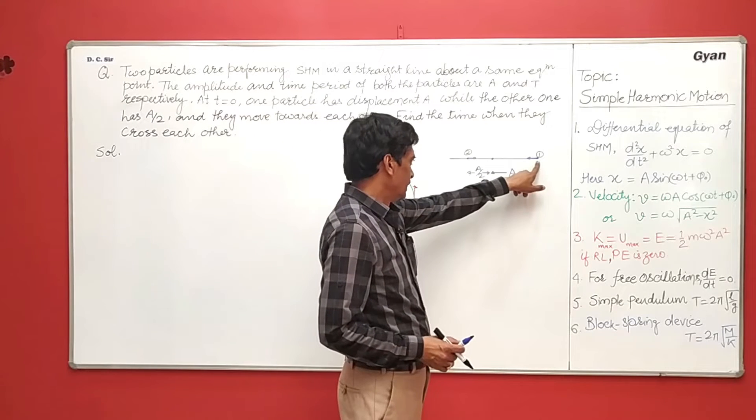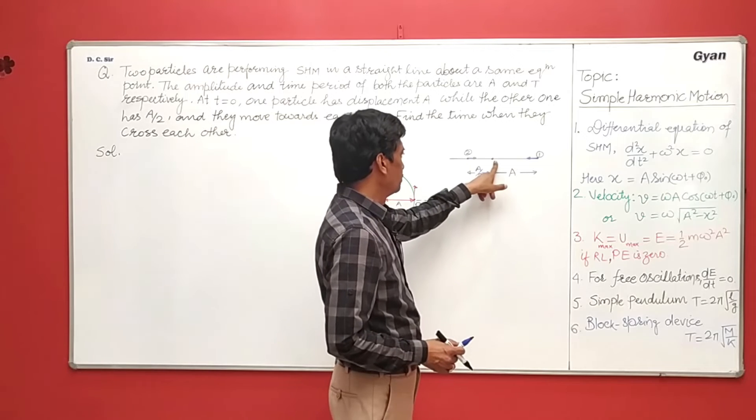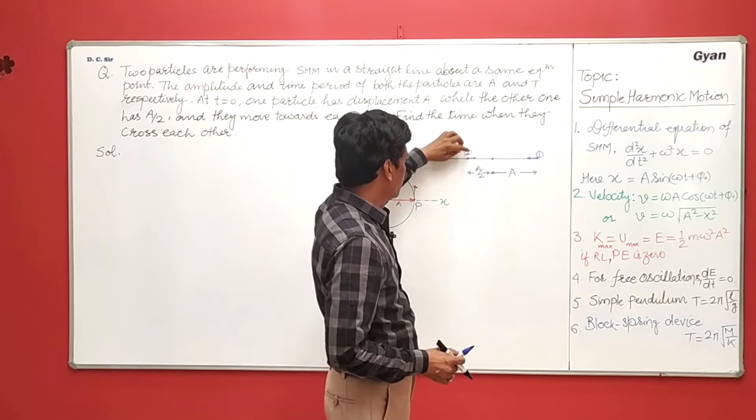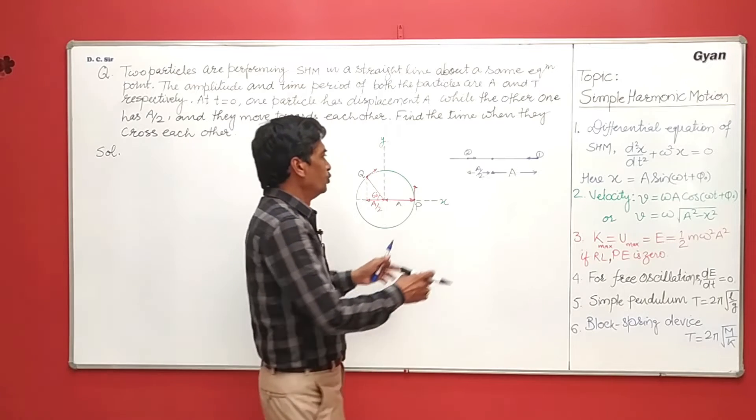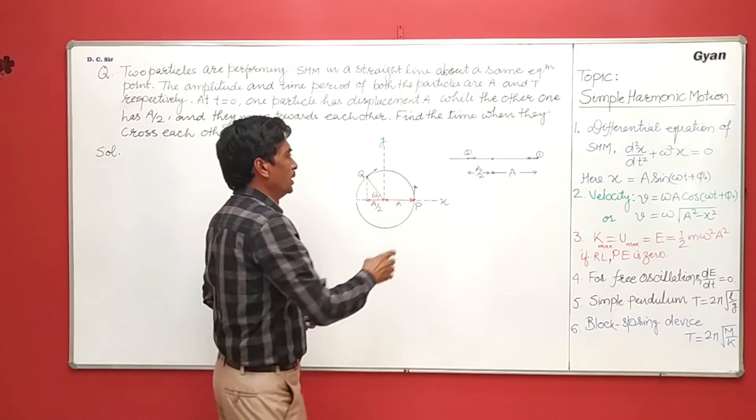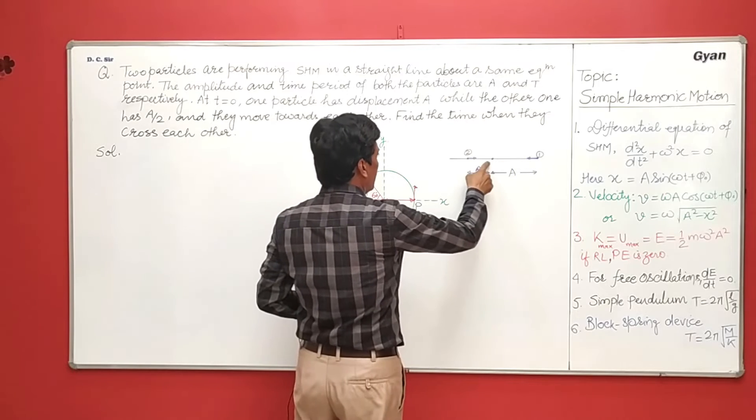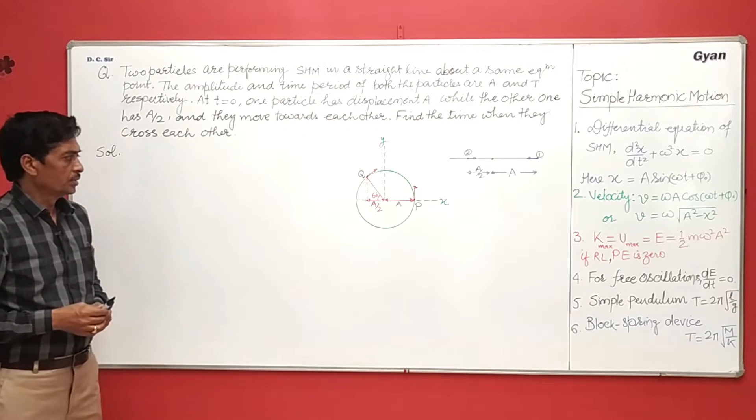One at a distance a from the equilibrium position. This is the equilibrium position and the second one is at a distance of a by 2 from the equilibrium position. And they move towards each other. We have to find the time when they cross each other. The problem can be solved very easily by using phasor diagram.